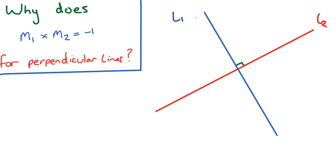In particular, why do we have this formula that if you multiply the gradients of two perpendicular lines, you always get minus one? This is one of those formulas that is very much just told to students and they're asked to remember it without really being given an explanation as to why it works.